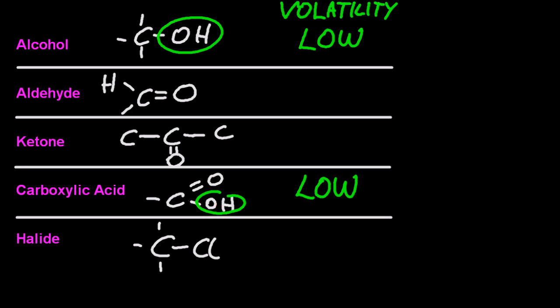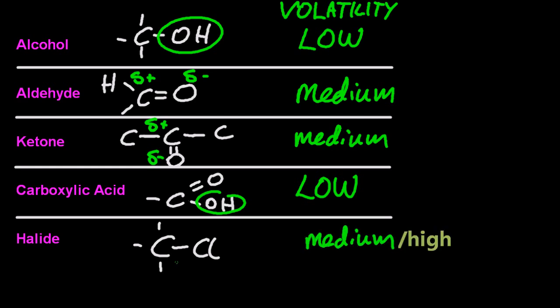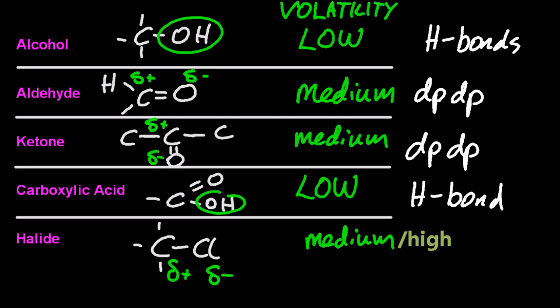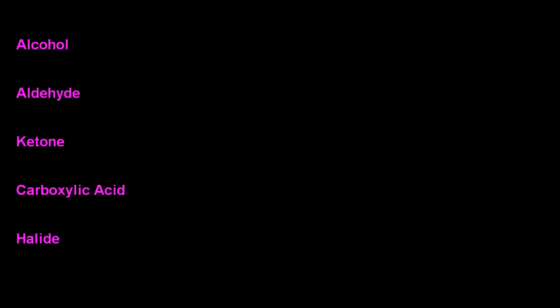Aldehydes and ketones have dipole moments, dipole-dipole interactions, but they're not as strong as the hydrogen bonds. The halide has a high volatility, medium to high, because that dipole is the weakest of anything we've seen so far. So if I were to mix them all up together and heat them up, the halide will come off first, the alcohol and carboxylic acid will boil off last.